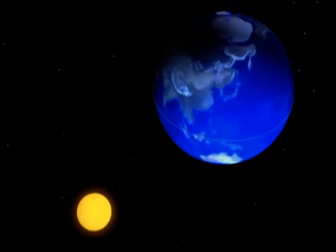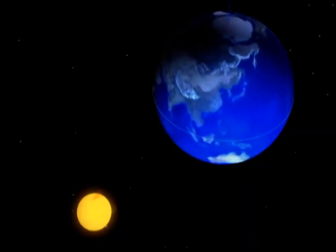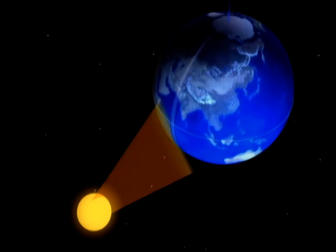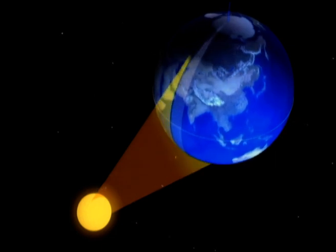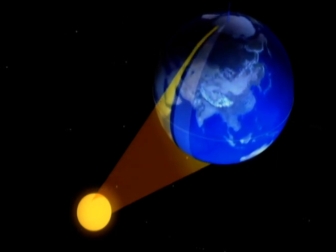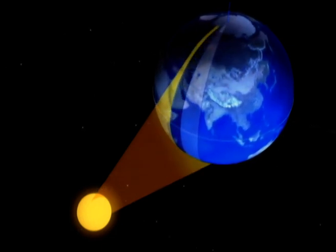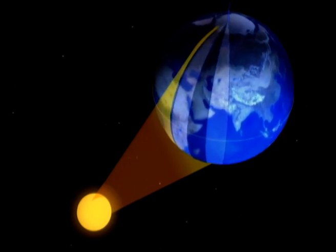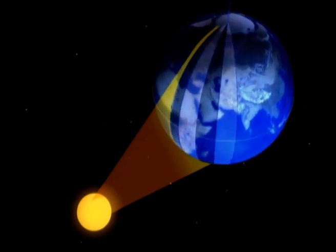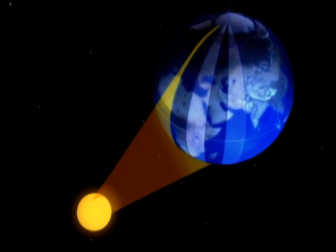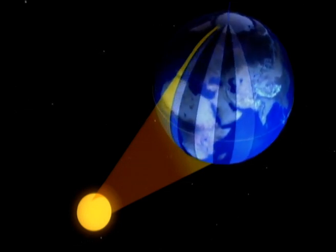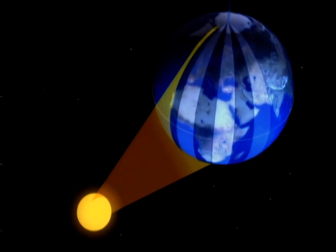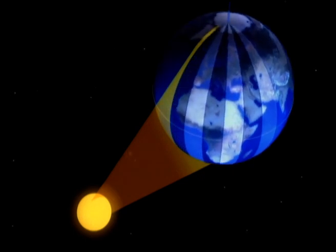A day is the amount of time needed for the Earth to spin round on its axis, and this period is divided into 24 hours. The sun doesn't rise at the same time everywhere on the planet, but bit by bit from east to west. That's why the Earth is split into 24 time zones.